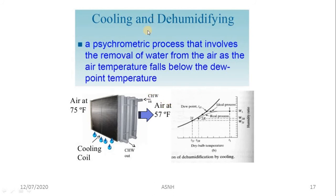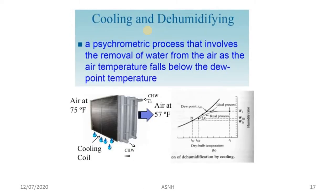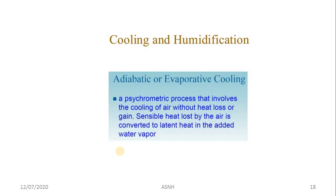Cooling and dehumidification involves removal of water from air as the air temperature falls below the dew point temperature. In this process, moisture content is removed from the air. Heating and humidification adds moisture content, while cooling and dehumidification removes moisture from the air.